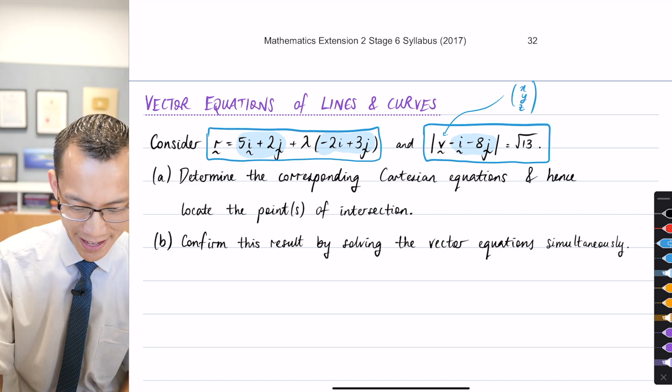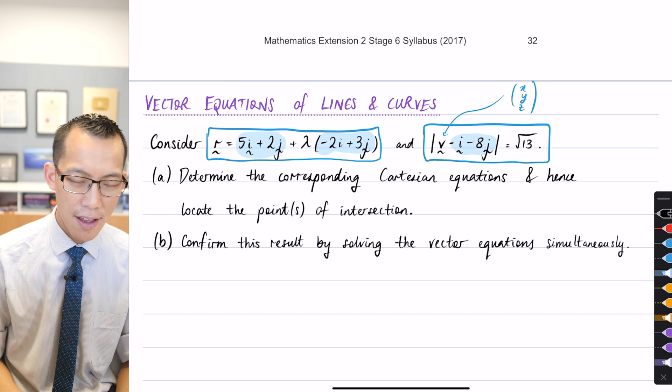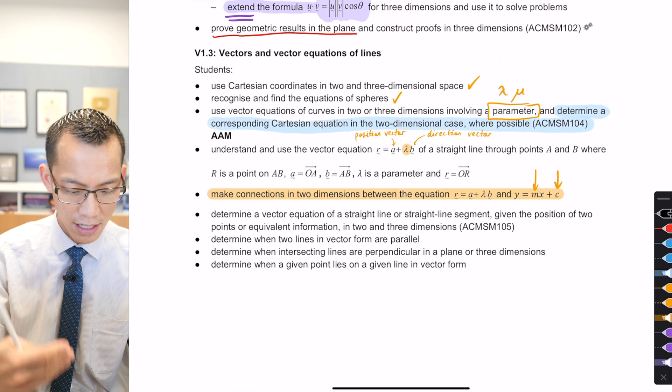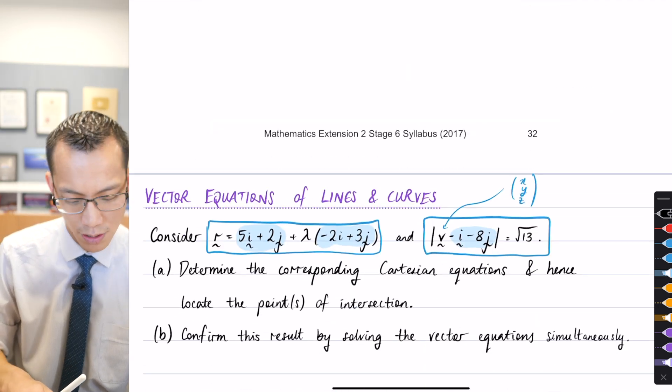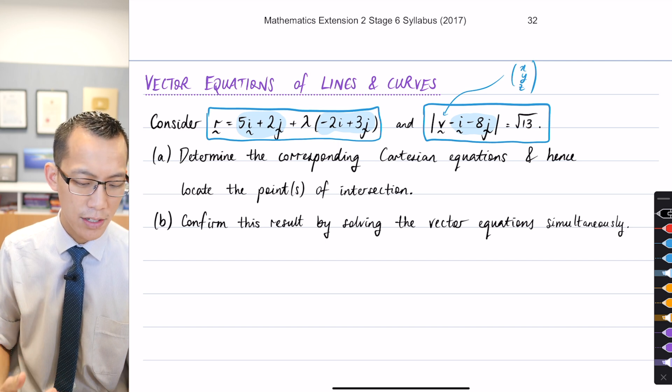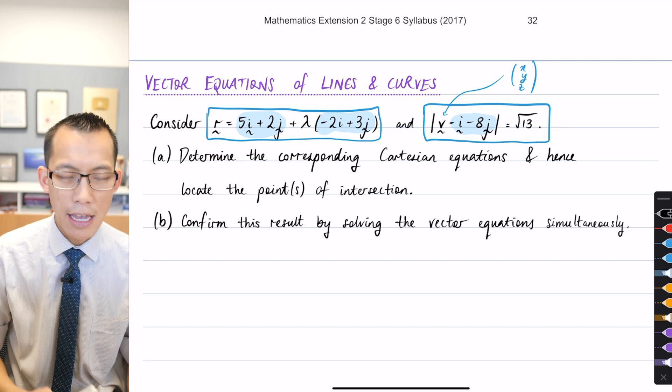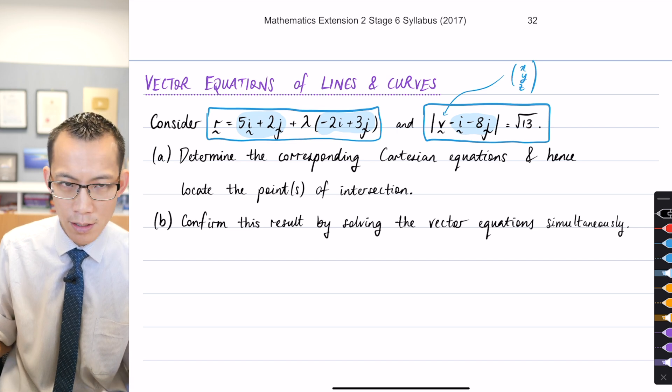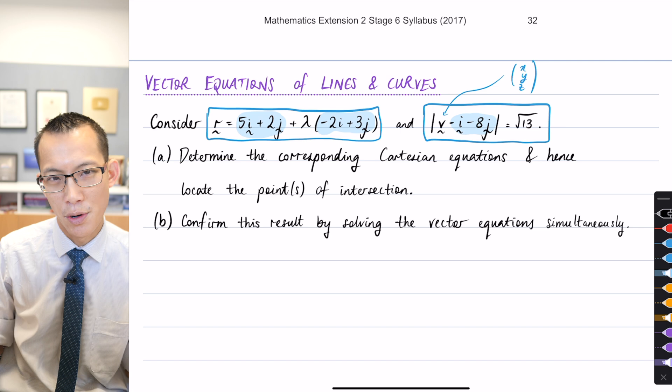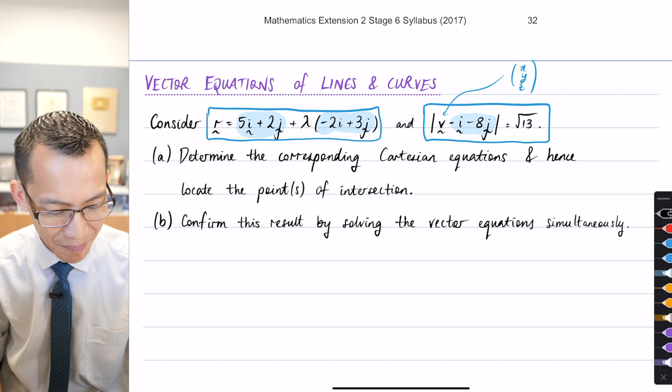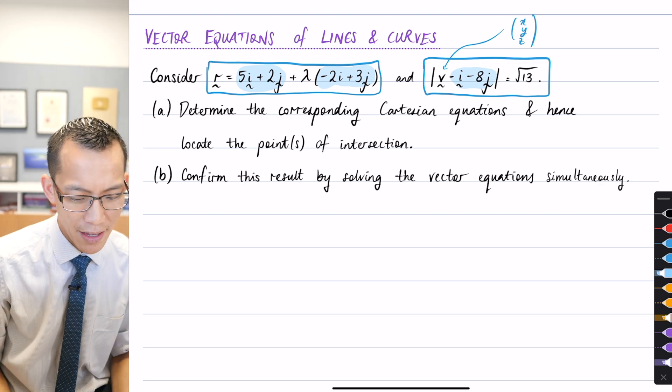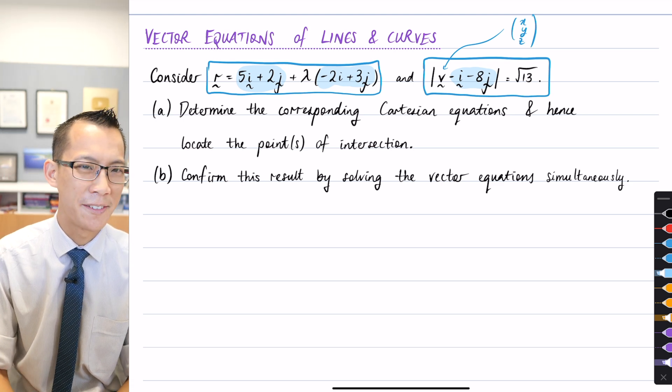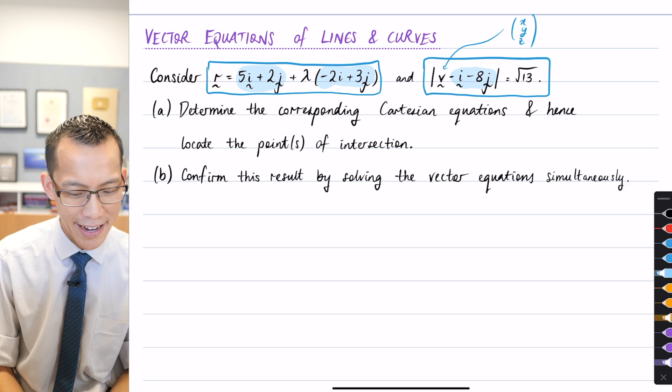So now that we know what the two equations represent let's actually think about what this question is asking. It says find the Cartesian equations. Determine a corresponding Cartesian equation, that's what we need to be able to do in the two-dimensional case which is why I've given us this and then what I want us to do is find the points of intersection between the line and the circle. As a spoiler yes they do intersect and we're just going to try and find out where.